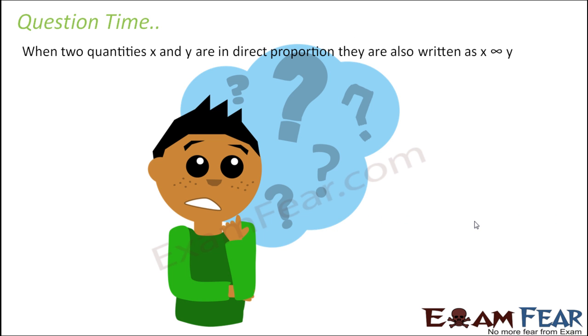So now we will try out some questions, before that let me tell you that whenever two quantities x and y are in direct proportion, we use the symbol of direct proportional. We express it like this, wherever we write this, it means that x is directly proportional to y. So this is the symbol of directly proportional to.